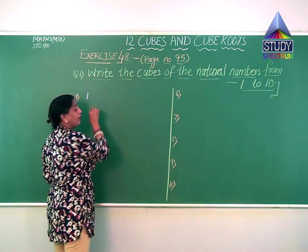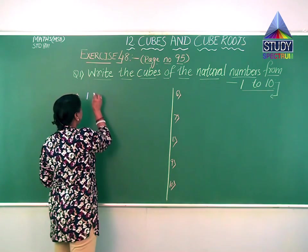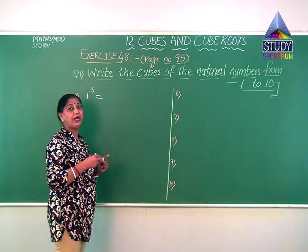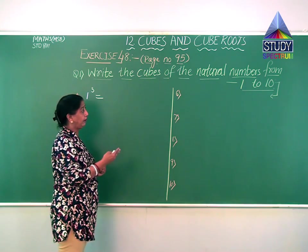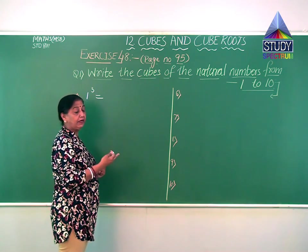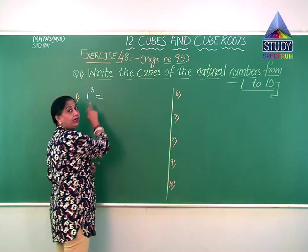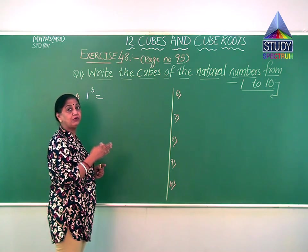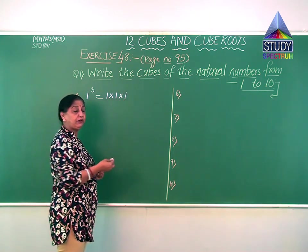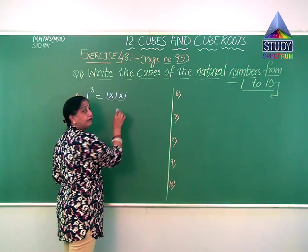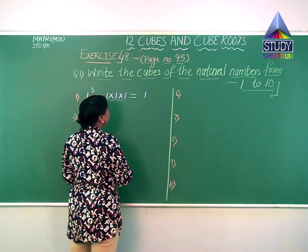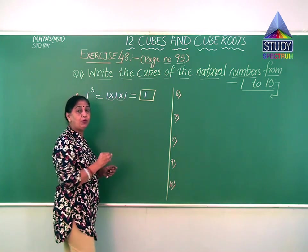The first one is 1. When I say cube, we have to write the index 3. So I will write 1 as base and 3 as index. This cube means 1 into 1 into 1. The product: 1 into 1 gives 1, again into 1 gives 1. So cube of 1 is 1 itself.